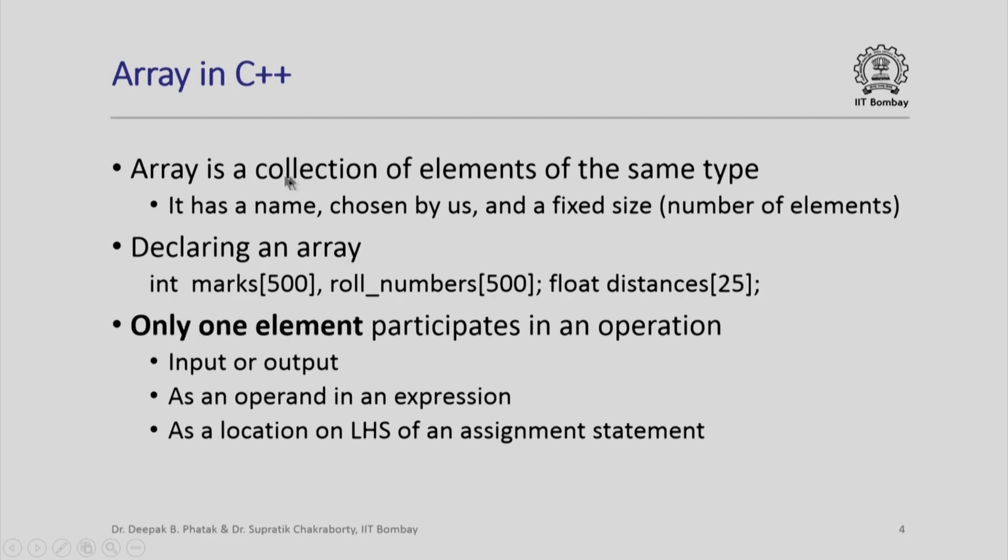An array in C++ is a collection of elements of the same type. It has a name which can be chosen by us and it has a fixed size which represents the total number of elements that the array can hold.